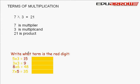Now, let's try. Write what term is the red digit. 5 multiplied by 3 is equal to 15. Here, we write product because 15 is the product.